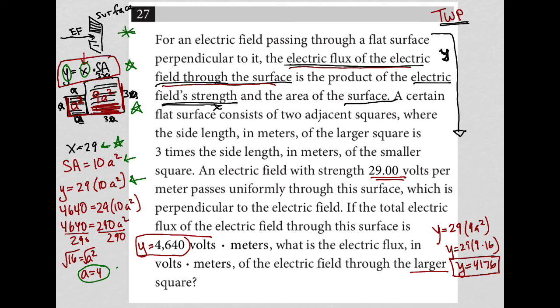And then the question asks us another question, which is now we want to solve for Y as if we were only focused on the large square surface. Only the 9A squared instead of the 10A squared. So that's our process to get to our answer. The answer is 4176.